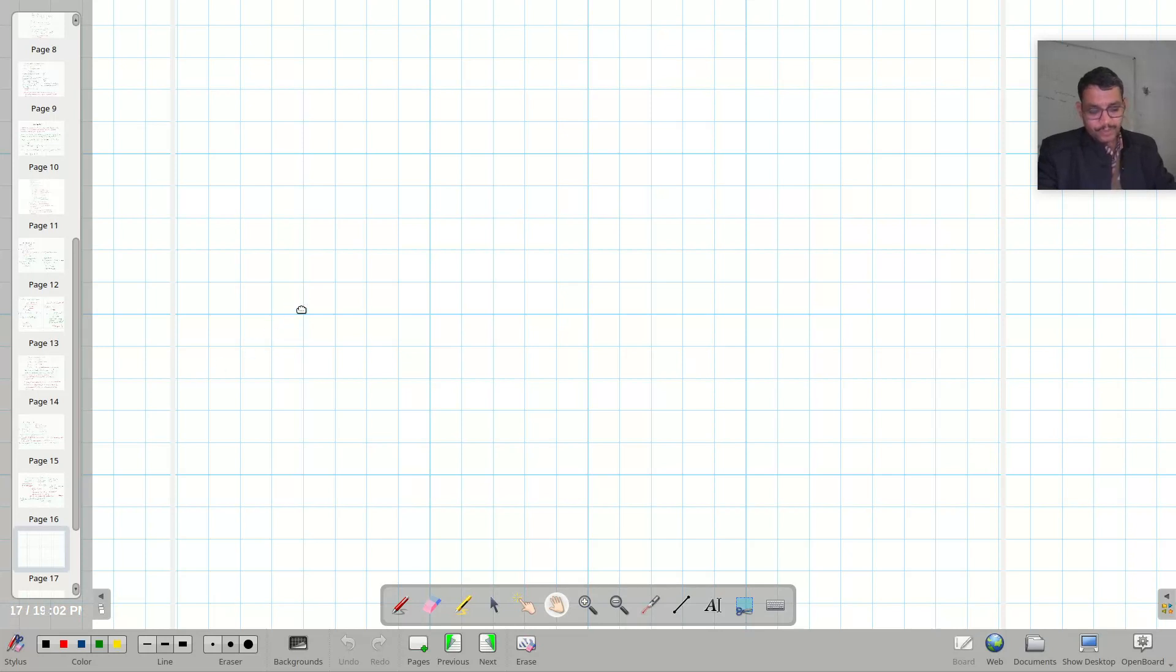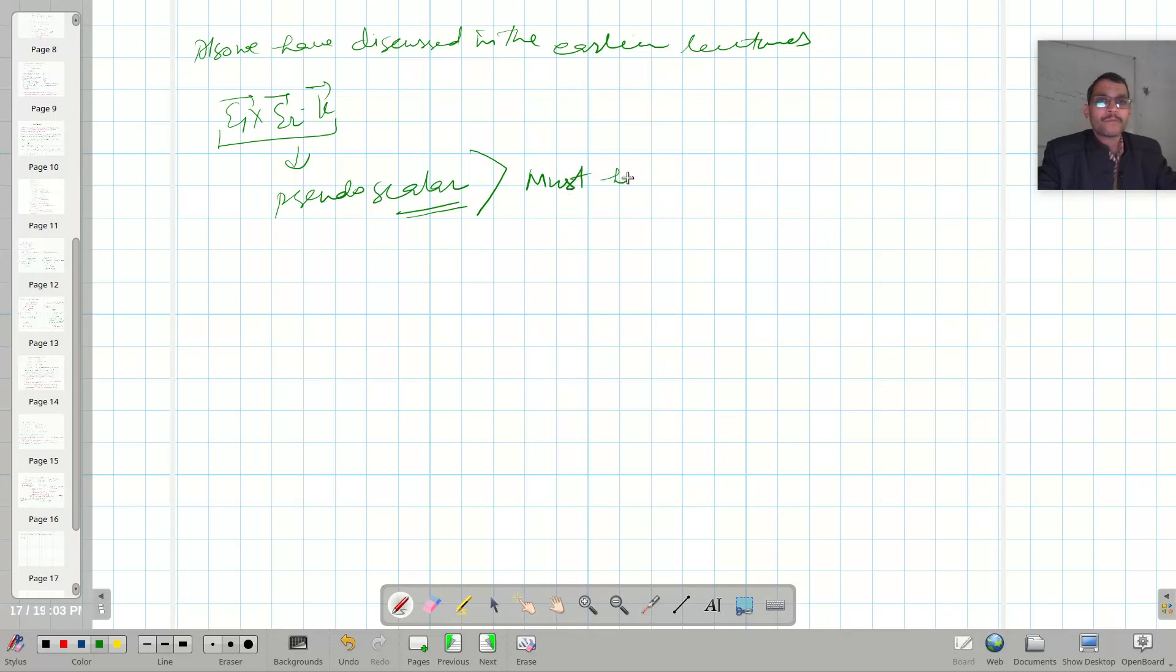Also we have discussed in the earlier lectures that epsilon 1, epsilon 2 dot, the scalar triple product is a pseudo scalar. Pseudo scalar must have odd parity.